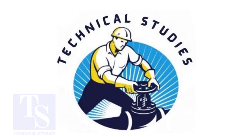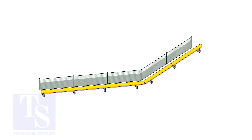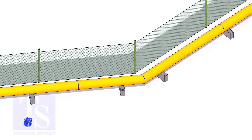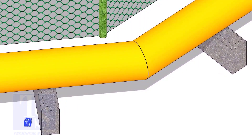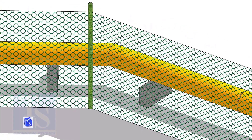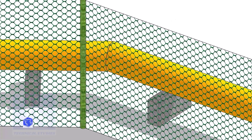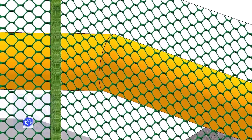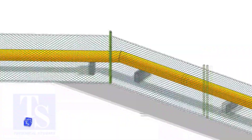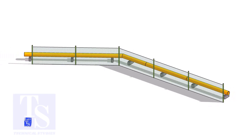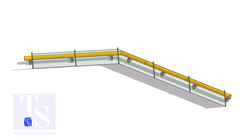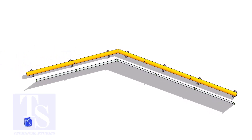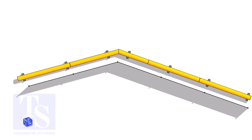Welcome to Technical Studies. Recently, one of the viewers told me he needs to make a pipeline around the fencing of a large plant for water supply. He has a problem — the fencing has several turns. He wants to know how to make miter cuts on the spot and how to find the miter cutback easily. Here, I will show you the easiest and fastest method to find the degree and cutback.